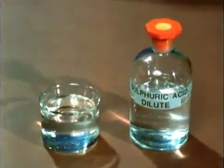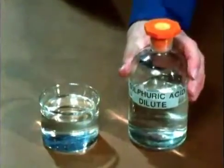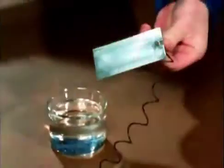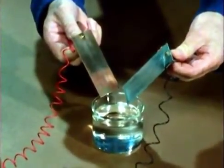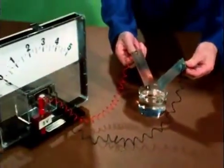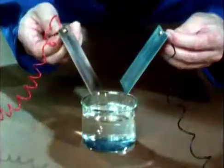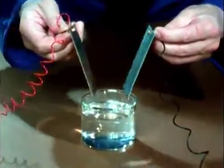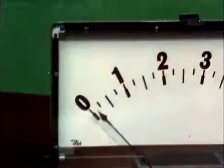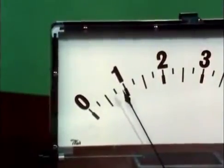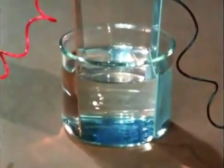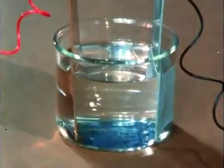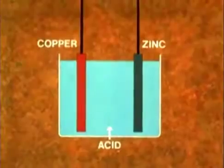Take a glass jar containing sulfuric acid diluted with distilled water. Now take a plate of the metal zinc and a plate of copper, each connected by a wire to an instrument which measures electric current. Dip the plates into the acid, and a current flows in the instrument. We have produced electricity from the chemicals zinc, copper and sulfuric acid, and we call this arrangement a cell.